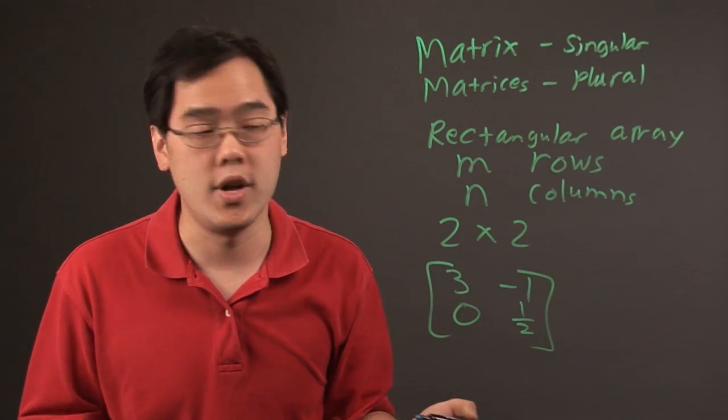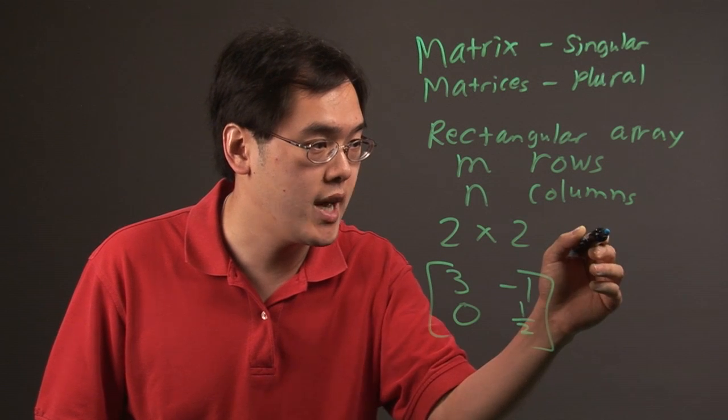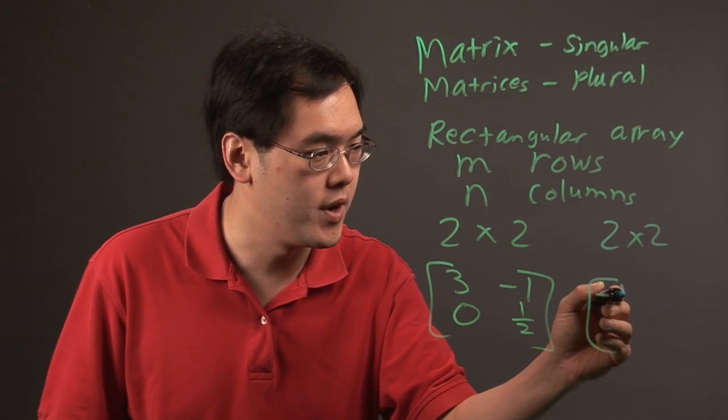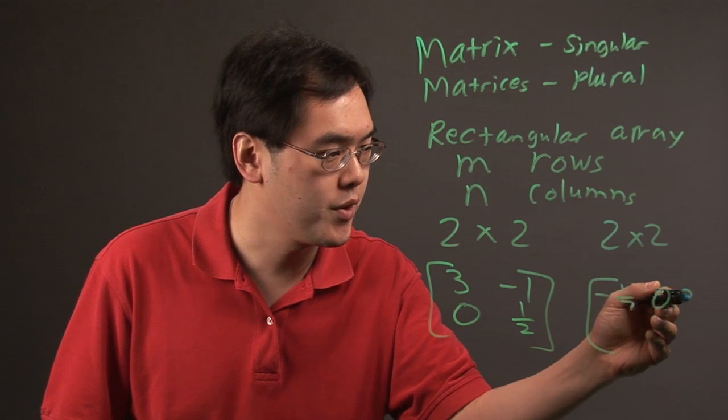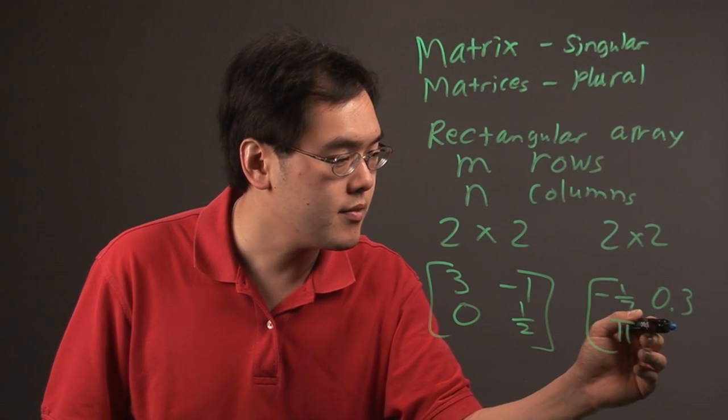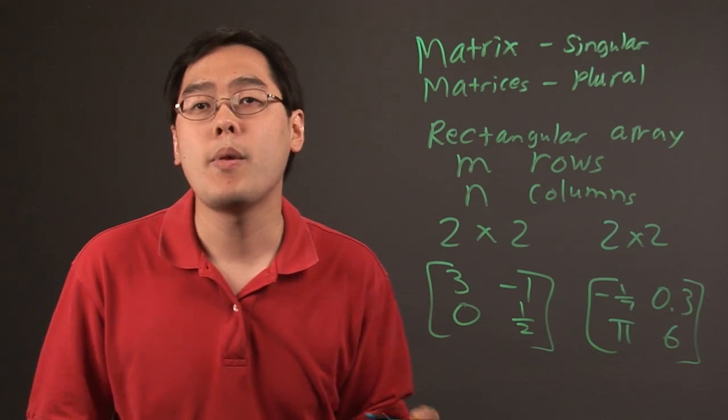Now if you have matrices, you have more than one. So if I wanted to have another 2x2 matrix, I could have negative 1 seventh, 0.3, pi, and 6, for example.